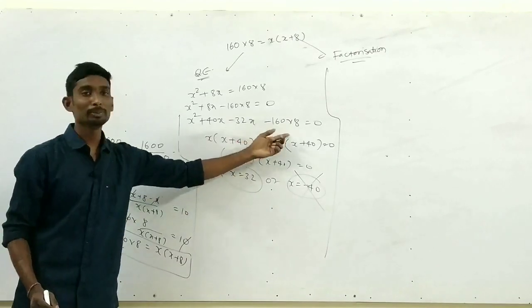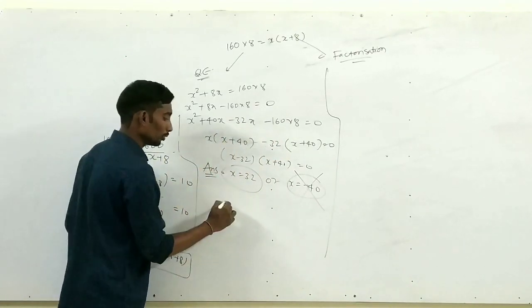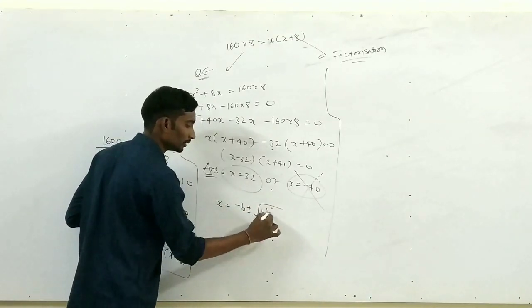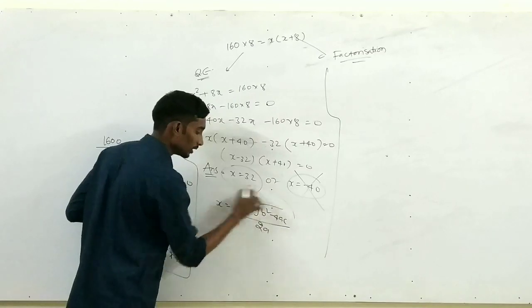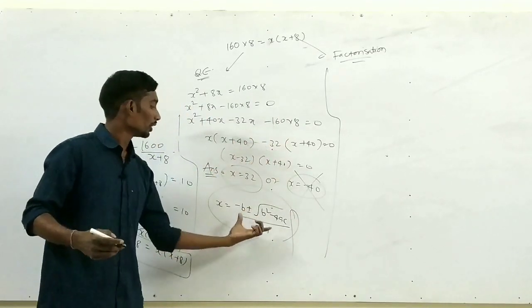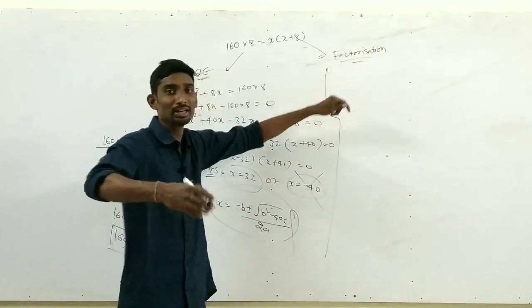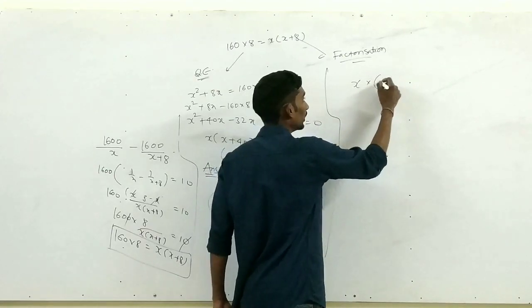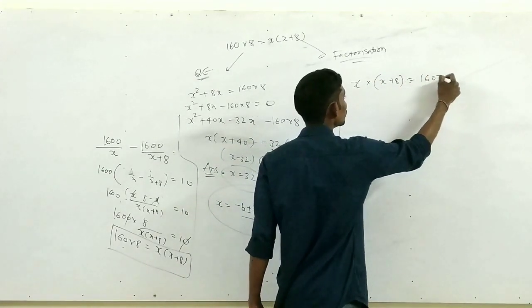अगर आप factorization से acquainted नहीं हो, तो quadratic formula use कर सकते हो: x = [−b ± √(b²−4ac)] / 2a। अब directly factorization का एक और तरीका: x(x+8) = 1280। एक number को उसी में 8 add करके multiply करना है — मतलब दो numbers का difference 8 होना चाहिए और product 1280।